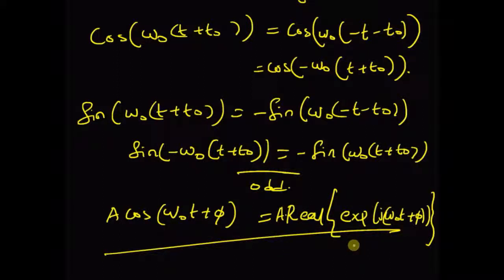To summarize, sinusoidal signals have three components: amplitude, frequency, and phase. Some key properties are: sinusoids are periodic, meaning x(t) equals x(t + T-naught); time shift in sinusoids is equivalent to phase shift — a time shift of t-naught equals a phase shift of omega-naught times t-naught, so for example a phase difference of pi/2 radians is equivalent to a time shift of T-naught by four. Finally, sinusoids have symmetry properties: cosines are even symmetric and sines are odd symmetric. Thanks for watching.